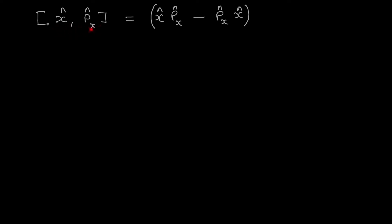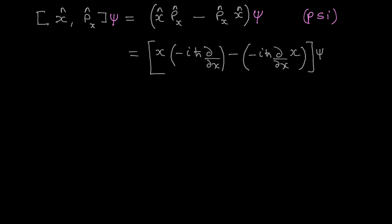The position and momentum commutator can be written as: position operator times momentum operator minus momentum operator times position operator. Now multiply both sides by psi — psi is the wave function. The reason we multiply by psi is because you cannot operate an operator by itself; operators always act on a function, so we place a dummy function there. I've placed the values of the operators: the position operator as x, the momentum operator, and the position operator, all multiplied by psi.